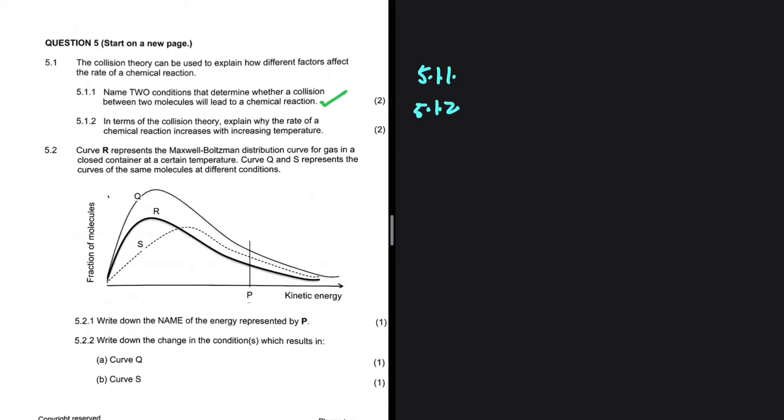In terms of collision theory, explain why the rate of a chemical reaction increases with increasing temperature. This is a follow-up to 5.1.1. In 5.1.1, we're seeing that sufficient kinetic energy, eK, that is greater than or equals to the activation energy. So what happens when we increase temperature in a chemical reaction? The average kinetic energy of the molecules is going to increase. More molecules will have a kinetic energy that is equal to or greater than the activation energy. And as a consequence, we're going to have more effective collisions per unit time.